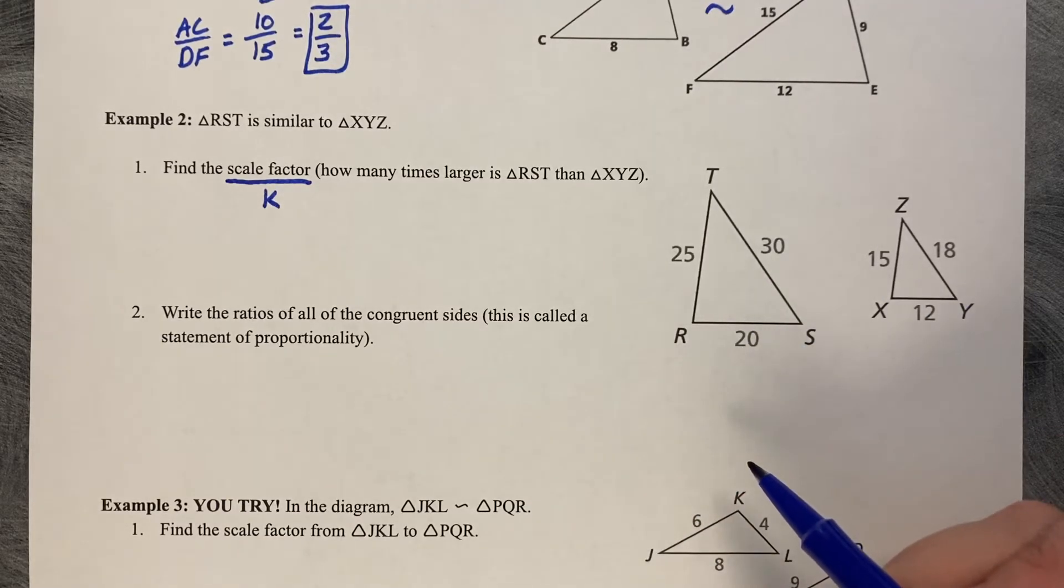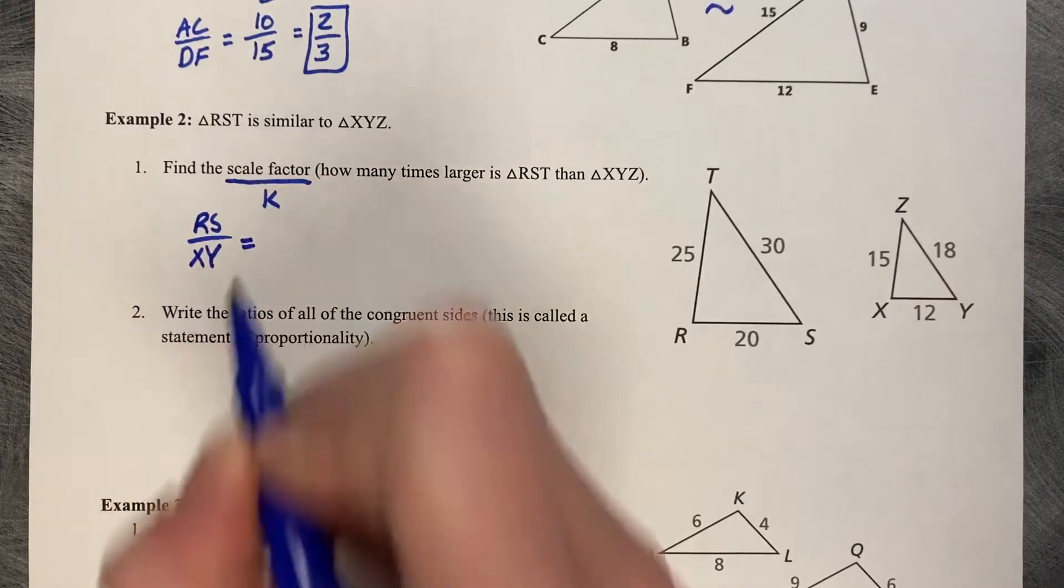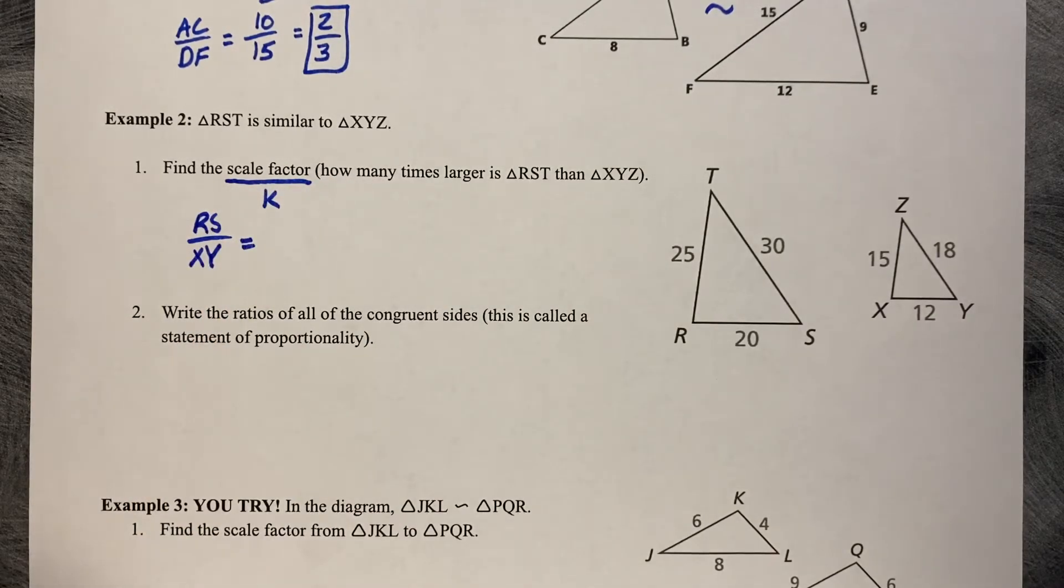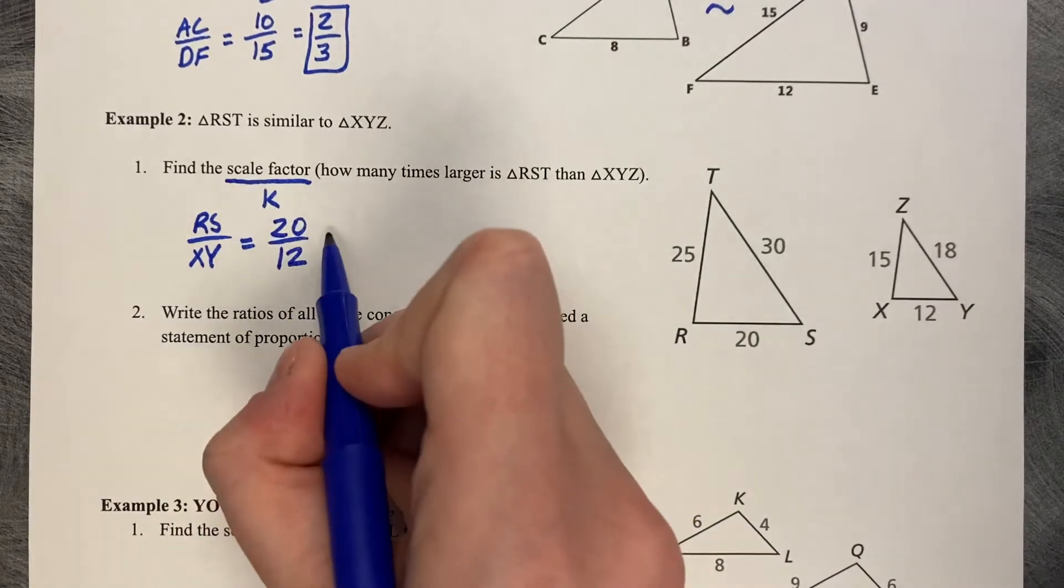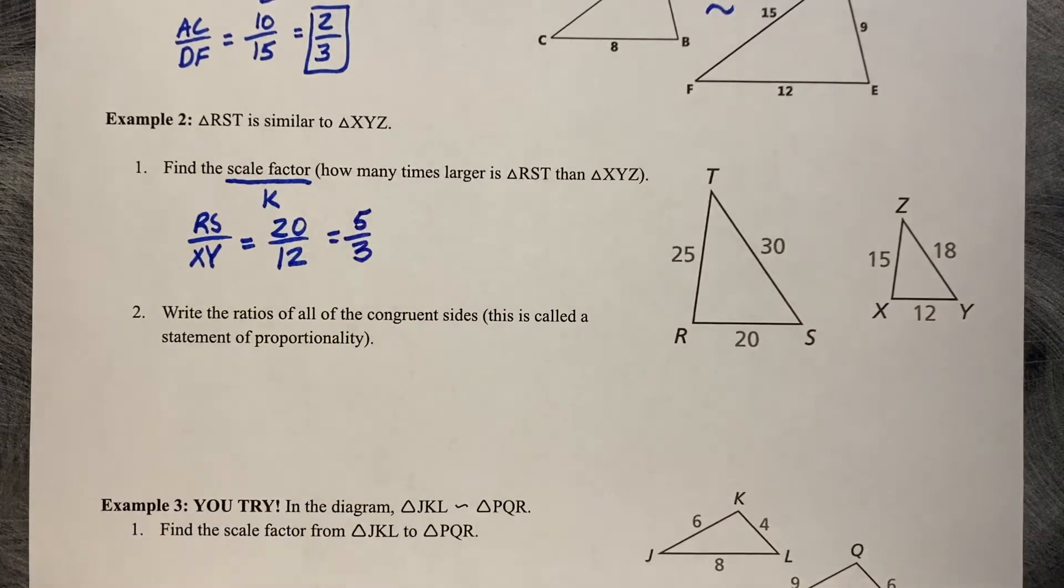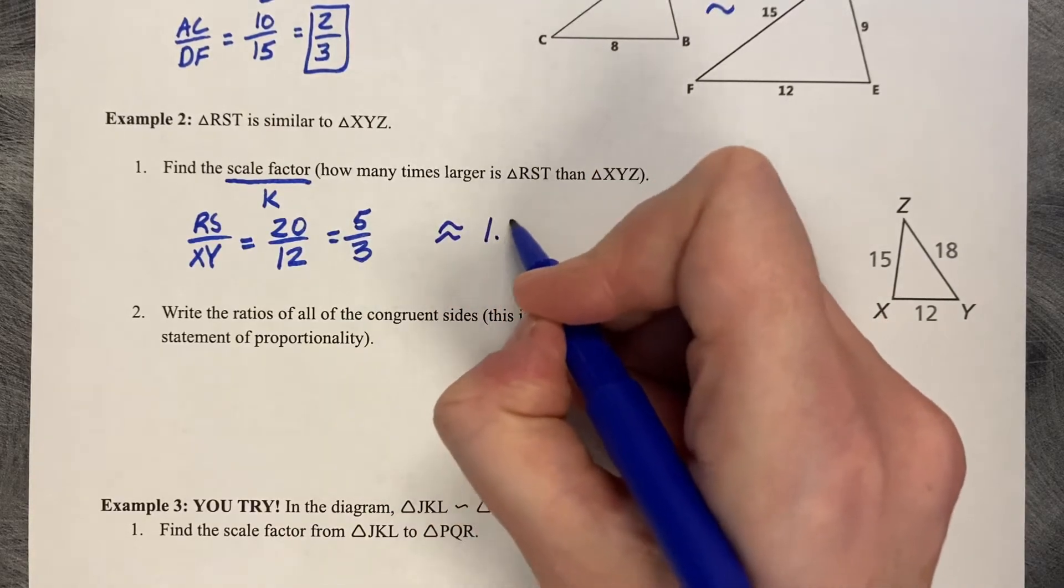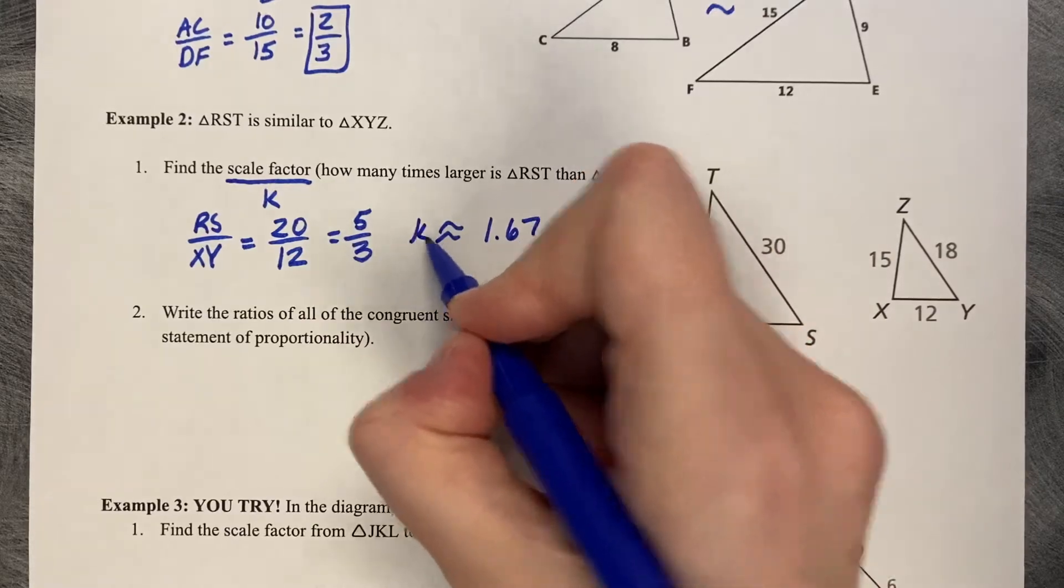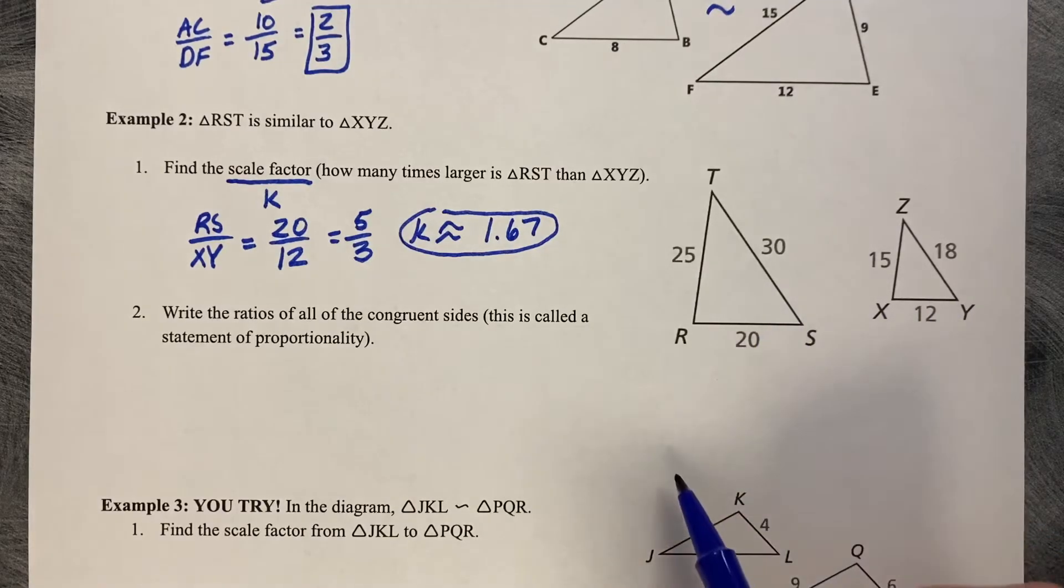So we're looking for how many times larger is the bigger one to the smaller one. You just choose two sides that are friendly to you. It doesn't matter which two sides as long as they correspond. I'm going to choose RS and compare it to XY. If we're trying to figure out how much larger, you want to start with your larger value on top. So it's going to be 20 divided by 12. We can reduce that in half, 10 divided by 6. Again, 5 divided by 3. So it's 5 thirds larger than XYZ, which is approximately 1.67 times larger. So K is approximately 1.67.